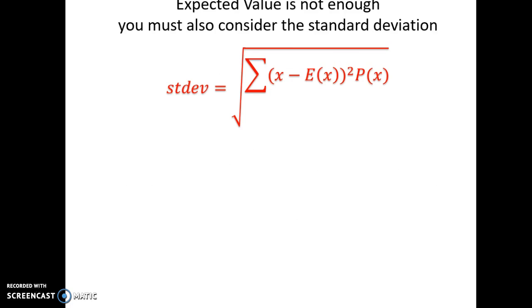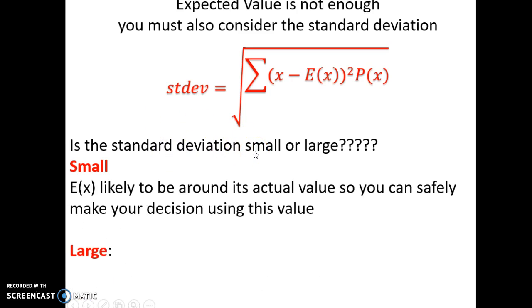So what you really want to come out with knowing about standard deviation in expected value is that expected value is not enough information. You also need to look at the risk. Are all the values that you're going to get really that close to the expected value? So you want to consider the standard deviation and ask yourself, is that small or large? If the standard deviation is small, that means that you're actually likely to get that expected value. That's likely to happen over time.